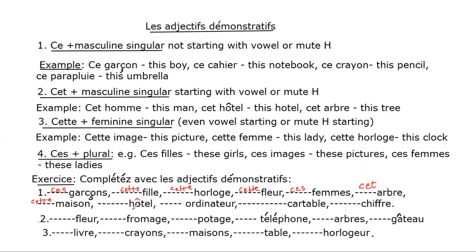'Maison' is feminine singular, so the answer is 'cette'. 'Hôtel' is masculine singular starting with mute H, so the answer is 'cet'. The next word is also masculine singular starting with a vowel, so the answer is 'cet'. 'Cahier' is also masculine singular, so the answer is 'ce'. 'Chef' is masculine singular, so the answer is 'cet'.